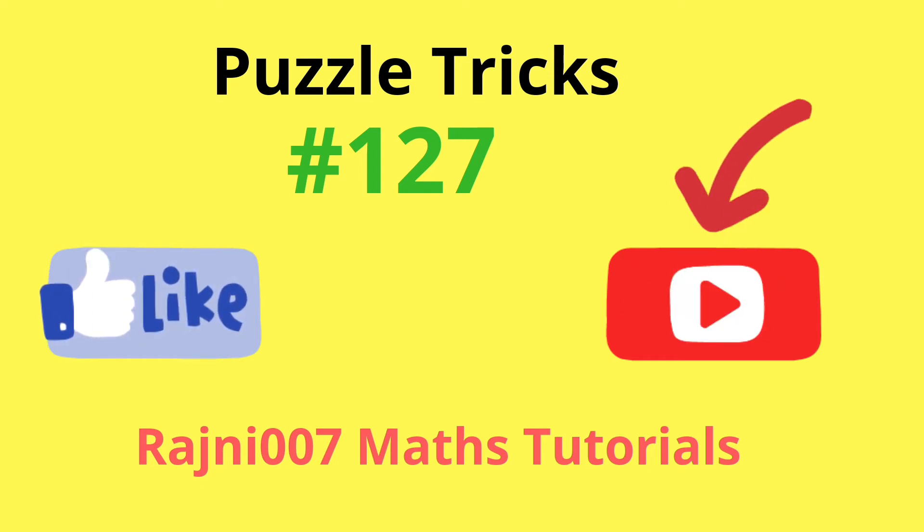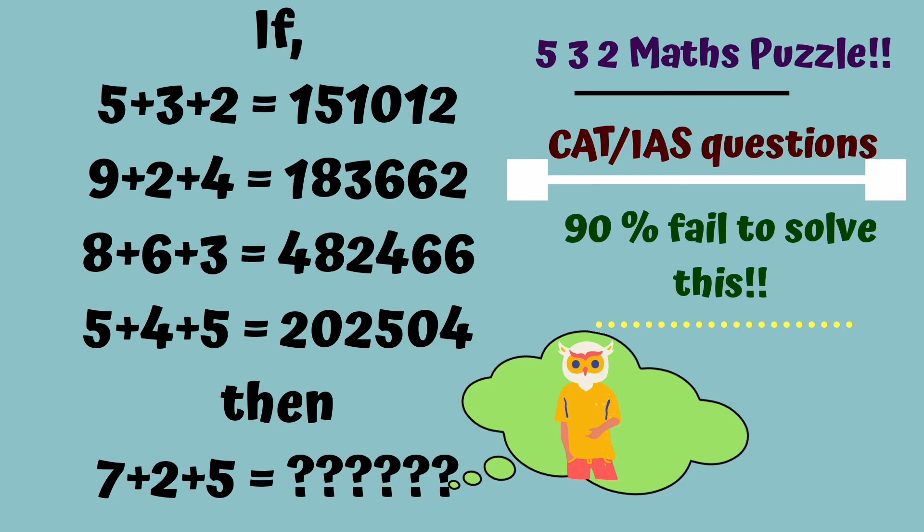Today's puzzle is 532 Maths Puzzle. You can see: If 5+3+2 = 151012, 9+2+4 = 183662, 8+6+3 = 482466, 5+4+5 = 202504. Then what will be the value of 7+2+5?